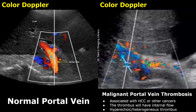Cavernous transformation is the term given to the formation of collaterals around the portal vein. This can occur in chronic cases of portal vein thrombosis.